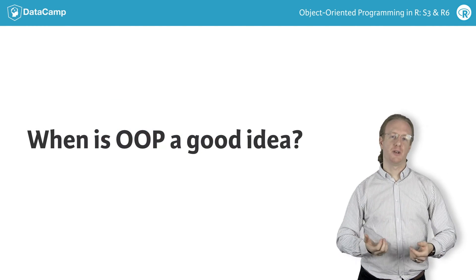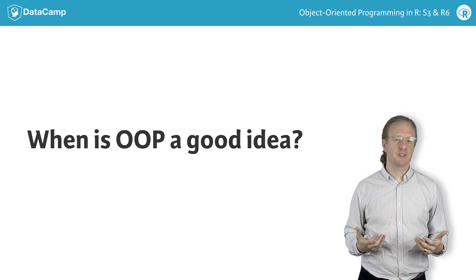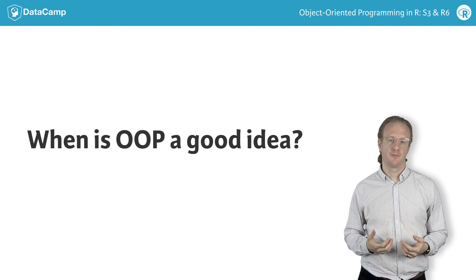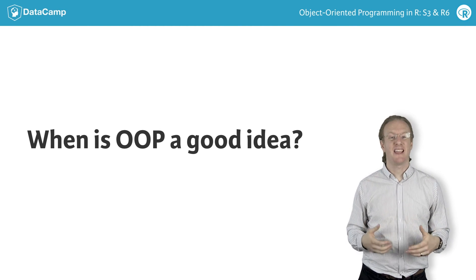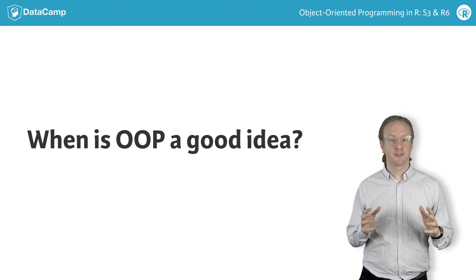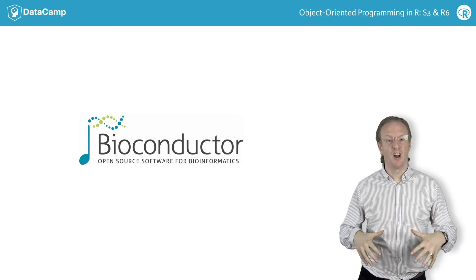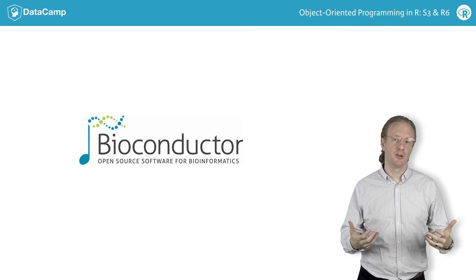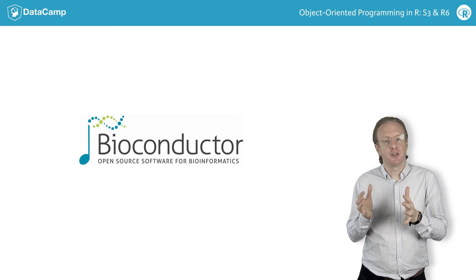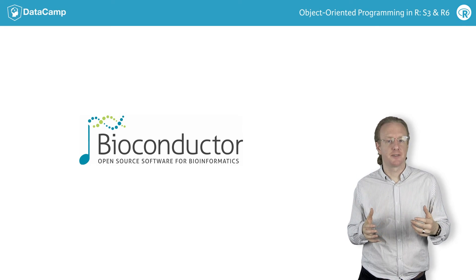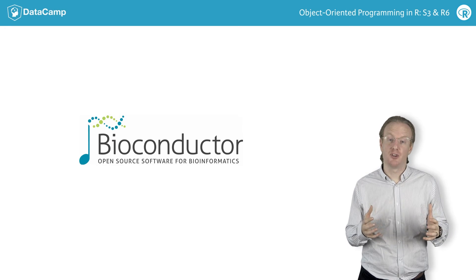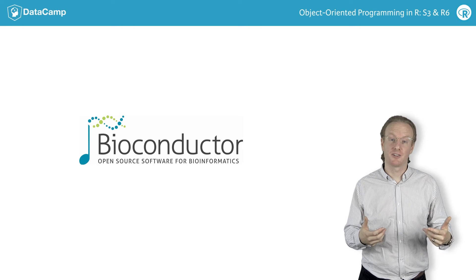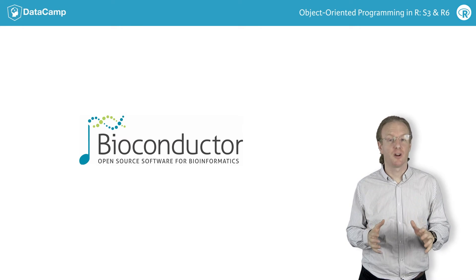So, when should you use object-oriented programming? It works best when you have a limited number of objects that you completely understand the behavior of. This is true of industry-specific data analysis. For example, the Bioconductor project has over 1,000 R packages for analyzing biological data, particularly genomics. Sections of a genome occur in many contexts here, so many Bioconductor packages make use of a genomic range object. By reusing this object throughout Bioconductor, the behavior is predictable across many packages.